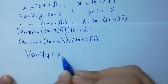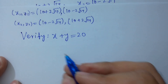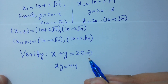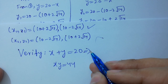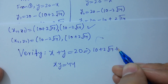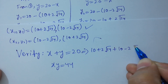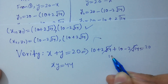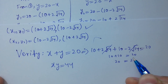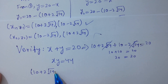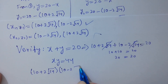Let's verify: x plus y equal to 20 and x times y equal to 44. Taking the pair (x1, y1): x1 plus y1 is (10 plus 2 square root of 14) plus (10 minus 2 square root of 14). The 2 square root of 14 terms cancel, giving 10 plus 10 equal to 20. Verified! Now for x times y: x1 is 10 plus 2 square root of 14 and y1 is 10 minus 2 square root of 14.